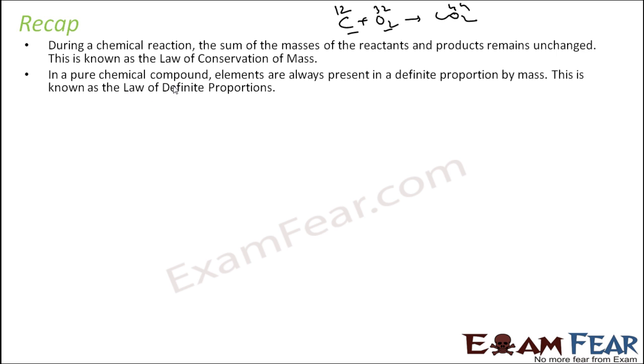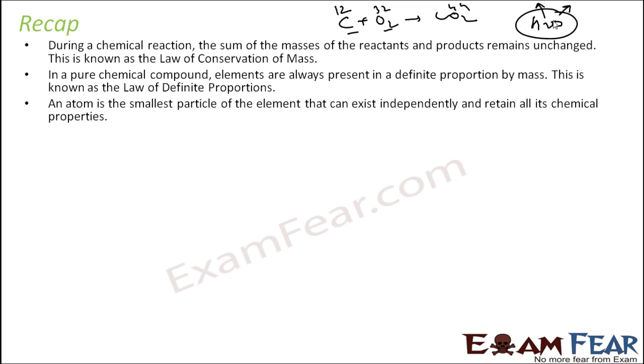The second thing we studied is that in a pure chemical compound, elements are always in a definite proportion. For example, you take water from any source - well, ocean, river, it doesn't matter. You will always have two molecules of hydrogen and one molecule of oxygen combined to form water. This is called the law of definite proportions.